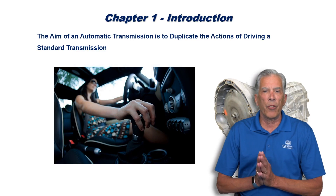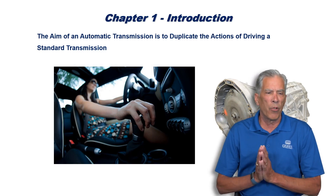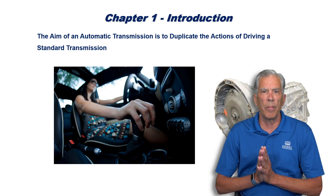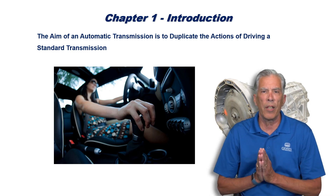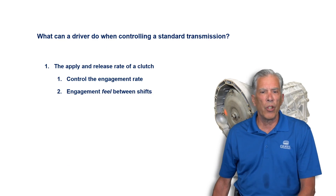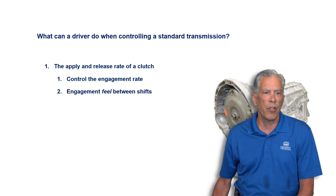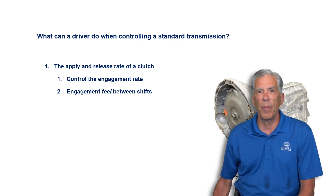It'll be the foundation for your advanced learning beyond this point. Chapter one: the introduction. The aim of the automatic transmission is to duplicate the actions of driving a standard transmission — putting it very simply. So we have a driver here with a standard transmission, and she has a few things she's able to do with the controls. What can a driver do when controlling a standard transmission? They have control over the apply and release rate of a clutch.